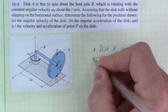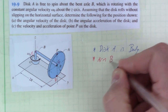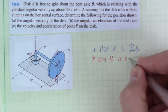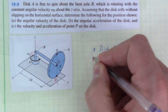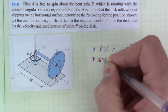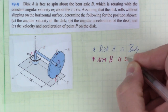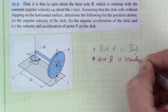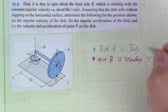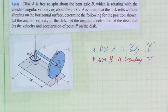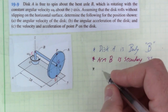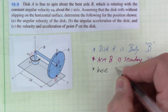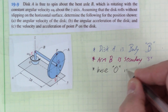Arm B is the secondary reference frame. The primary is always the base of these systems — that's O. So: disk A is the body, arm B is secondary, and O is primary.